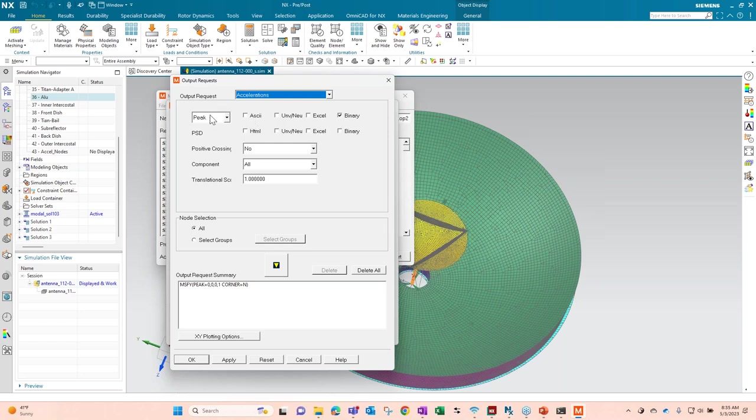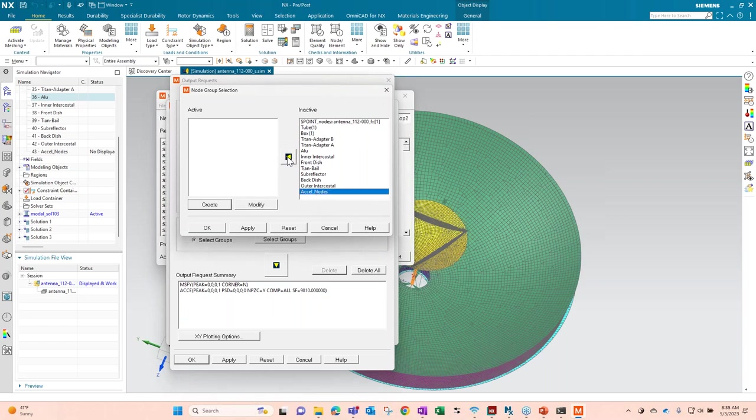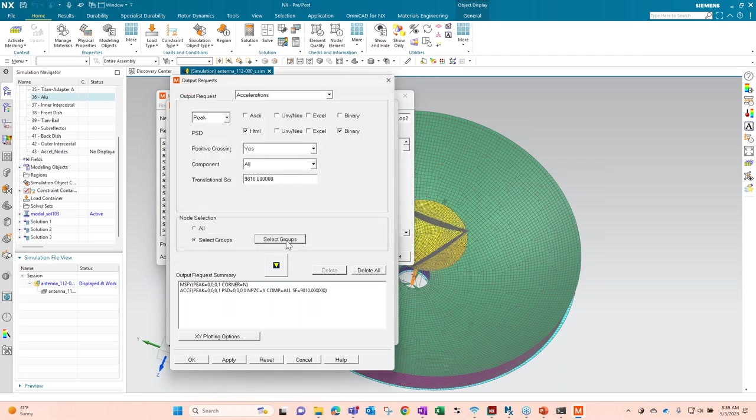Again, I want some accelerations. I'll take those and I'll add positive crossings. It's useful if you're doing fatigue. And again, that scalar factor for the units of gravity. And I just want to do this for everything. But then in addition, I want to come back. I want to see some PSDs. And I actually have a group of Excel nodes because I don't want to write PSDs for every single node in the model. There's just some key ones. Often you set this to, if you knew you were doing a test later, you'd set it to ones where you knew you were putting accelerometers on.